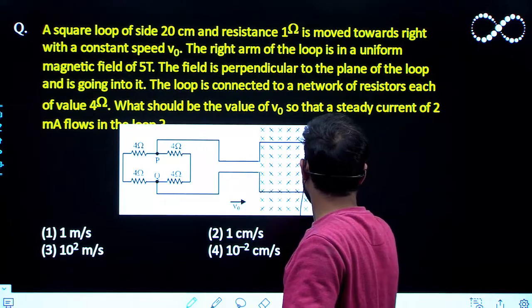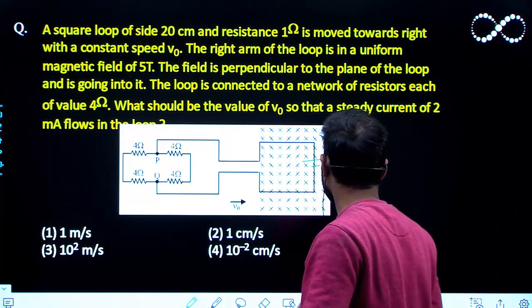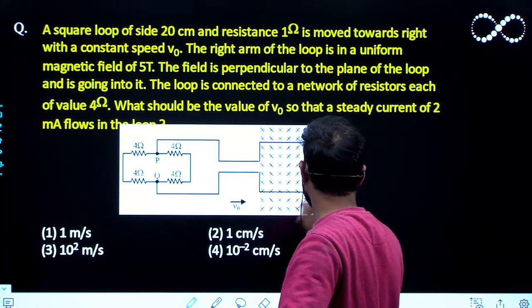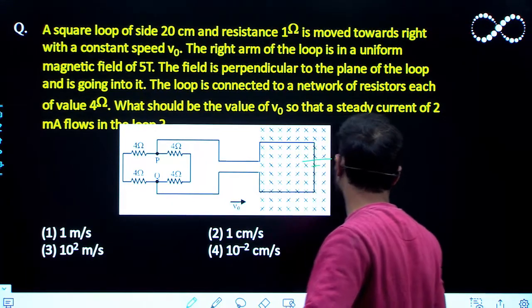V cross B. So this will be positive, this will be negative here. V cross B, this is the positive, this will negative terminal, and here the V0 B into L. This is the motional EMF.